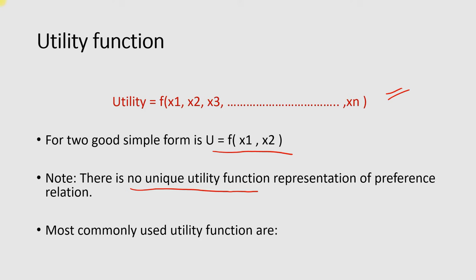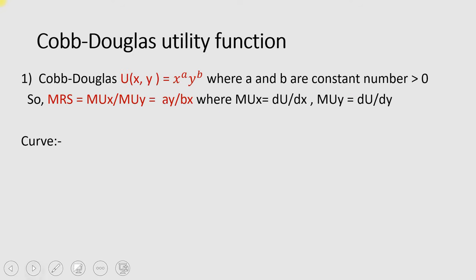But there are four commonly used utility functions in economics that we will discuss one by one in this video. First is the Cobb-Douglas utility function, which is represented by its general form where a and b are constant numbers greater than zero.